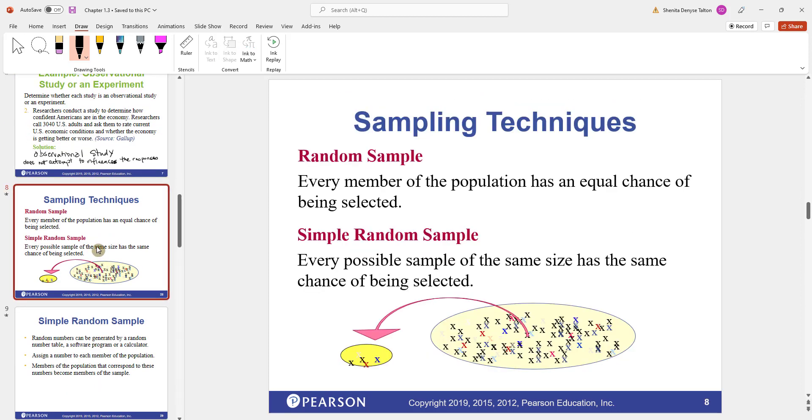Now let's talk about different sampling techniques. A random sample is where every member of the population has an equal chance of being selected. You can also think of this as a simple random sample. Every possible sample of the same size has the same chance of being selected.